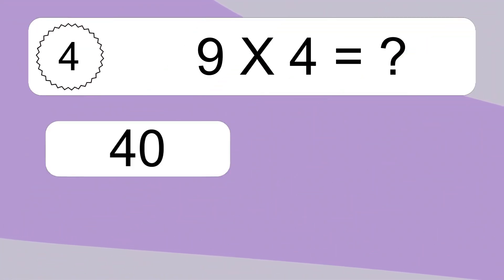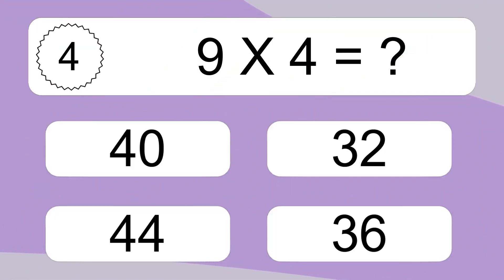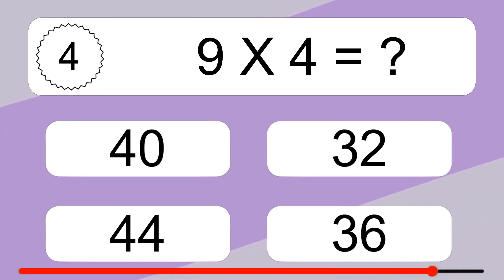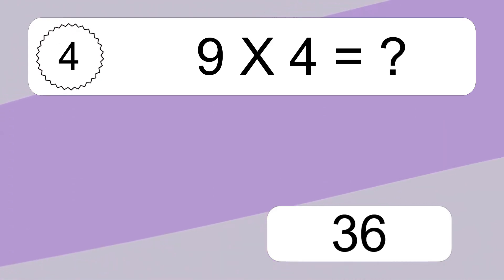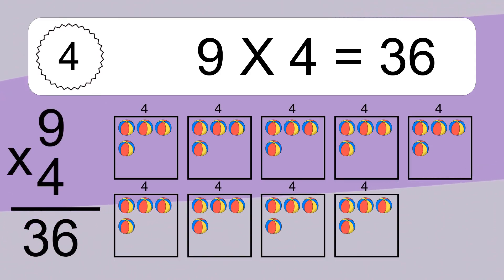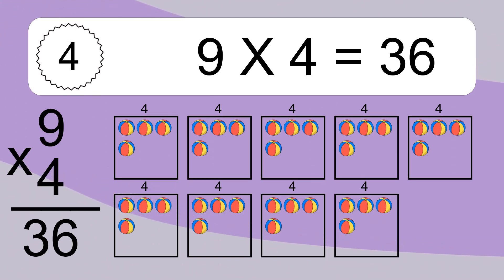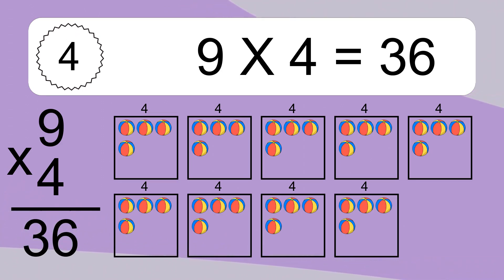9 times 4 equals what? 9 times 4 equals 36. We have 9 boxes and each box has 4 colorful balls inside. If you count all the balls in all the boxes together, you will have 9 times 4 balls. This equals 36 balls.